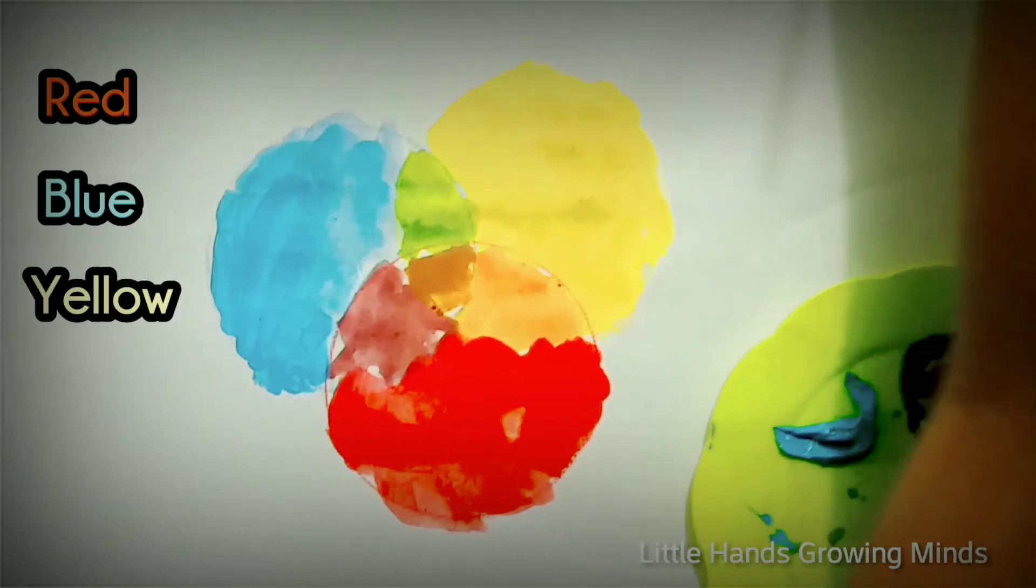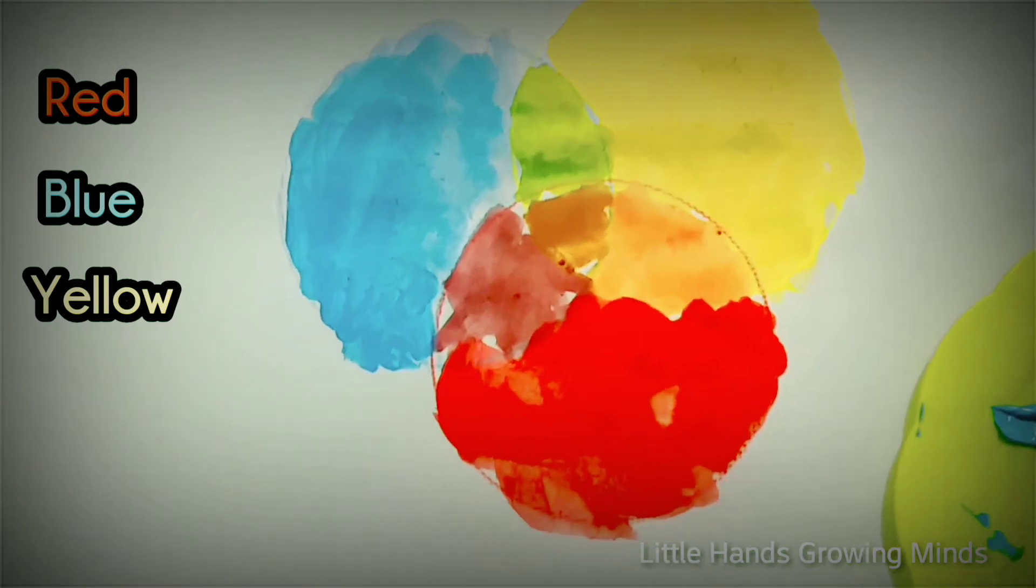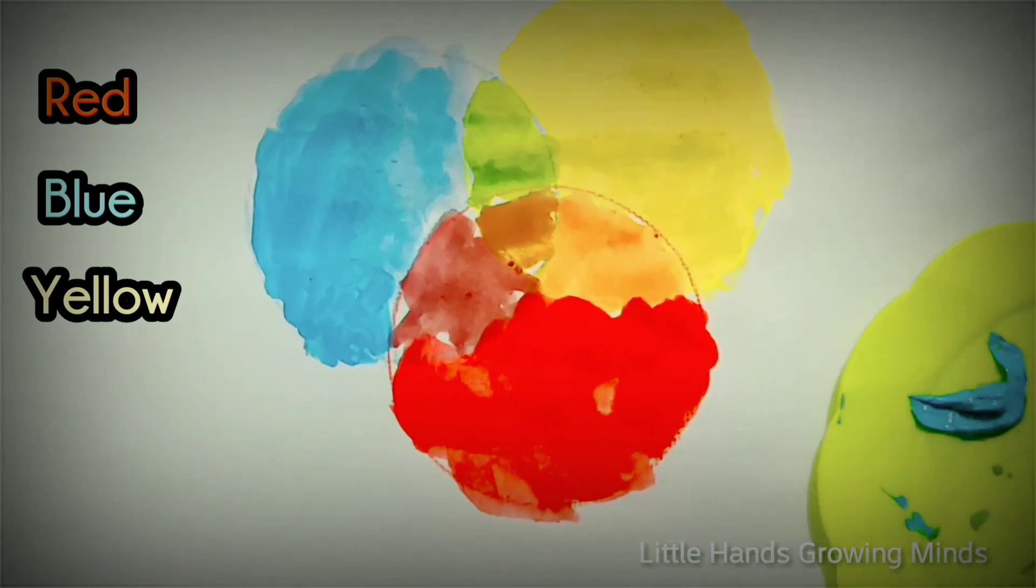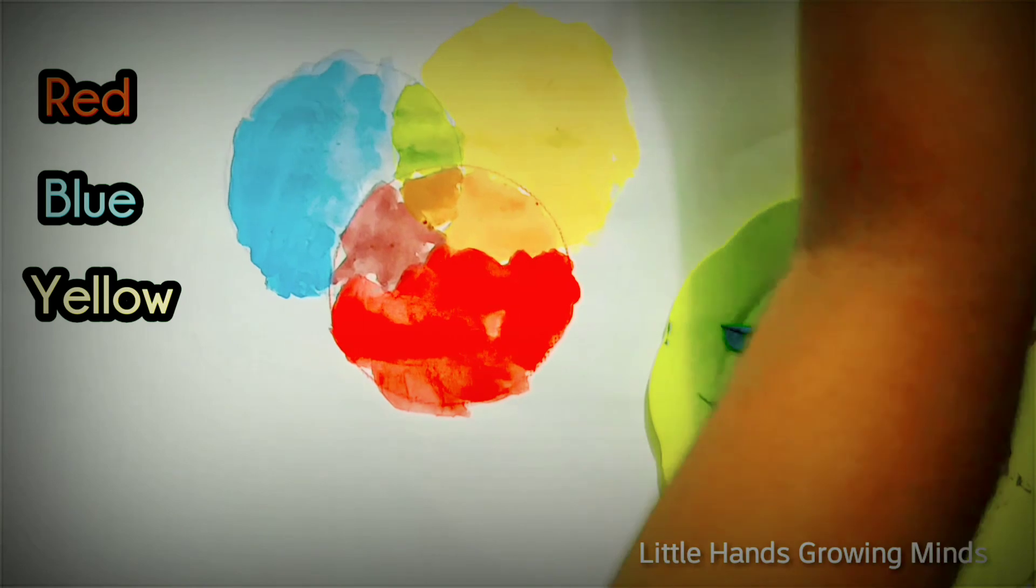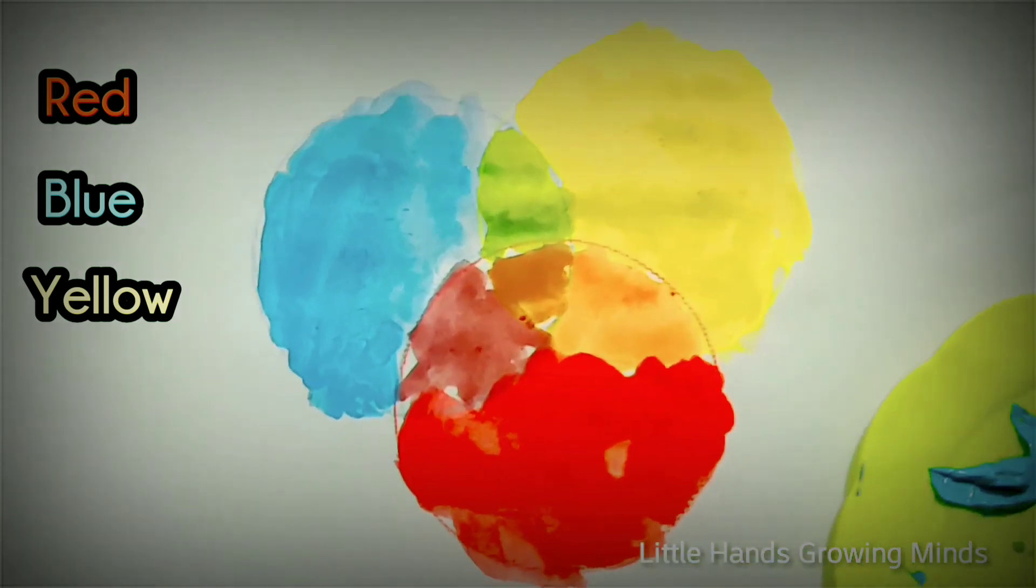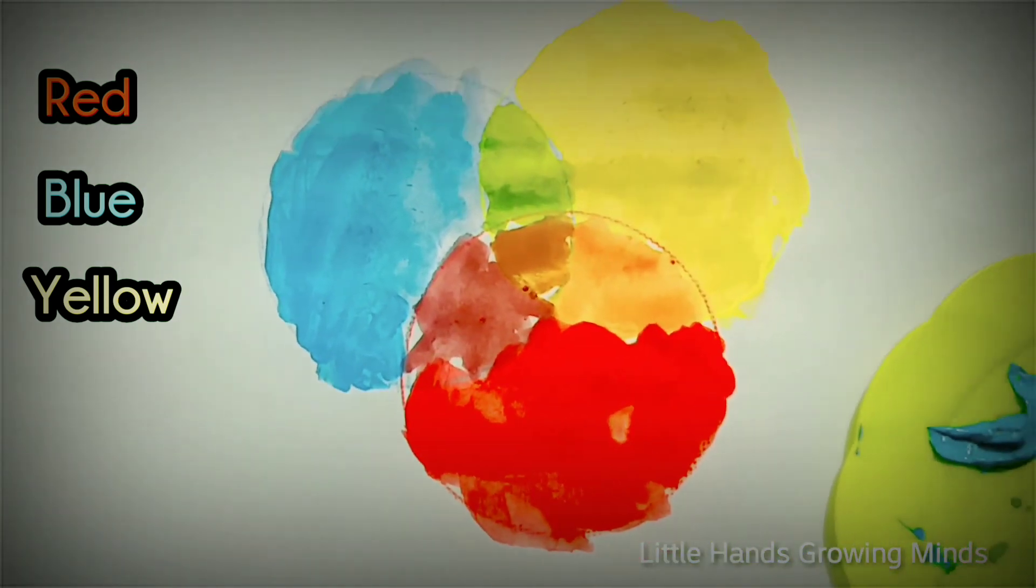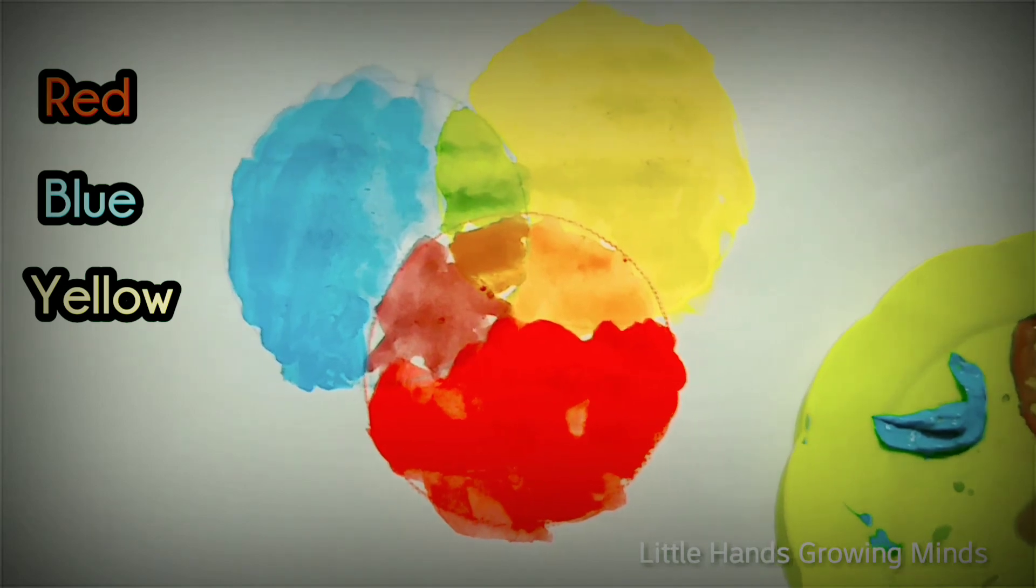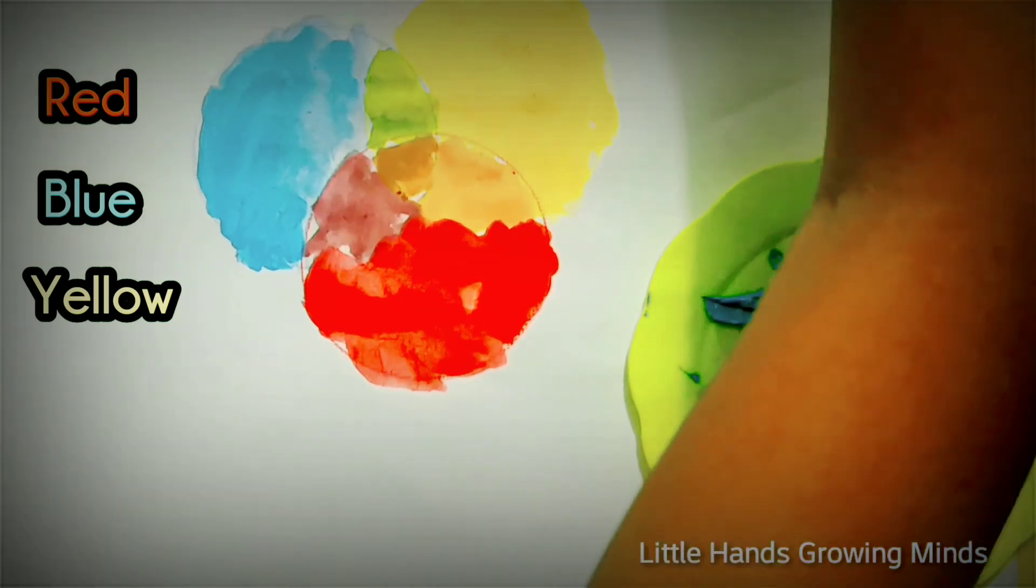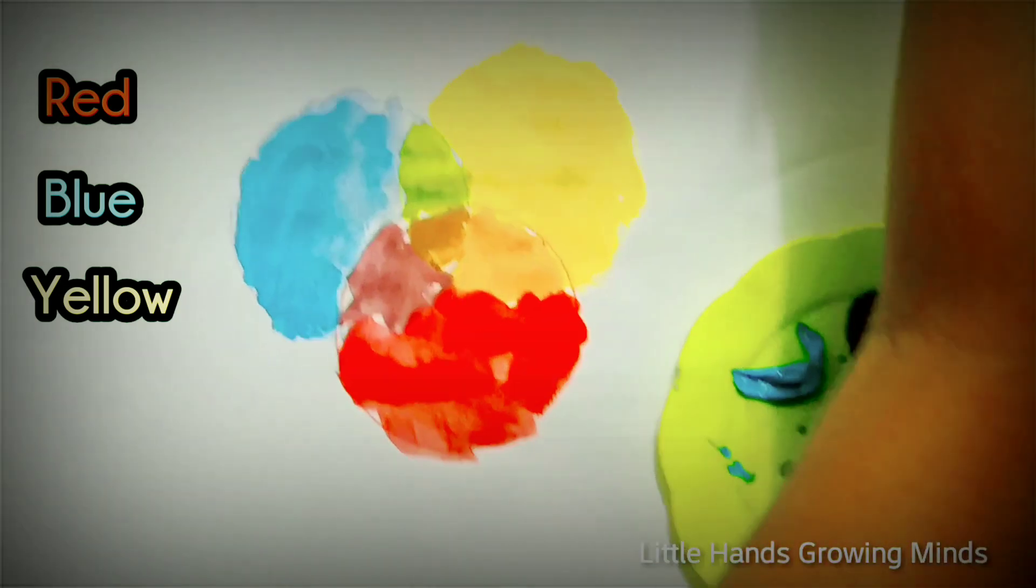Red, blue and yellow are the primary colors. Red plus blue make purple. Red plus yellow makes orange. Blue plus yellow make green. And all the primary colors make brown.